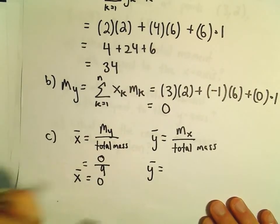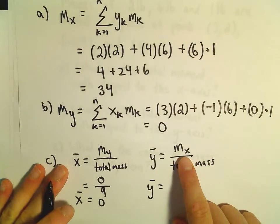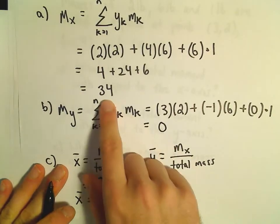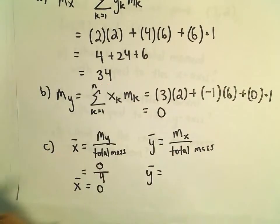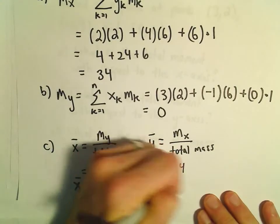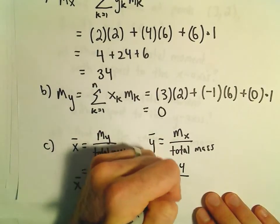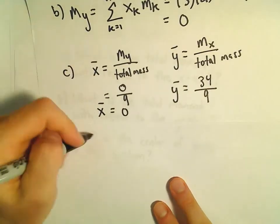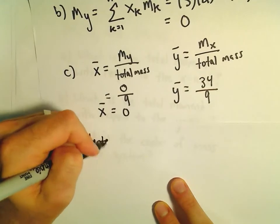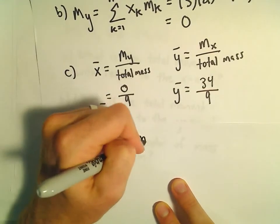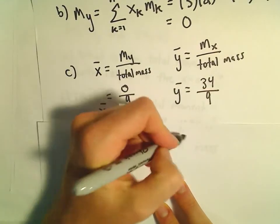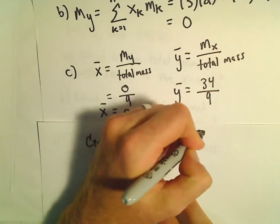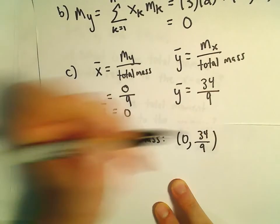Our y-bar is the moment about the x-axis, which we had as a value of 34, divided by the total mass, which is 9. So we could simply say the center of mass is at the point (0, 34/9).